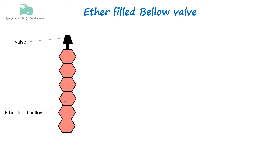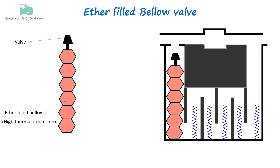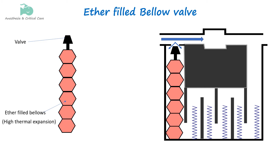Some vaporizers use the expansion and contraction property of a liquid inside bellows to control the valve. Ether-filled bellows, just like bimetallic strips, work on the principle of thermal expansion of ether — a liquid with a high coefficient of thermal expansion. The bellows expand or contract in response to temperature changes. As the temperature rises, the ether inside the bellows expands, causing the bellows to expand as well. This expansion mechanically alters the flow of fresh gas via the valve into the vaporizer. When the bellows expand during higher temperature, it closes off some fresh gas passing into the vaporizing chamber, thereby reducing the vapor uptake by the carrier gas.